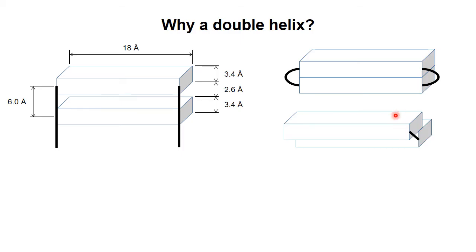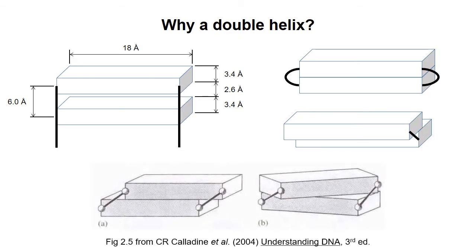You could also be bringing the top base pair down towards the bottom one like this, but again the backbone atoms could not be accommodated in this type of structure. The same is true if you rotated the backbone the other way.